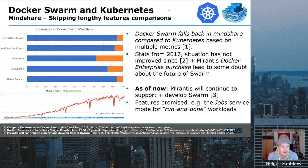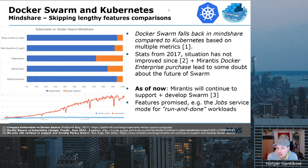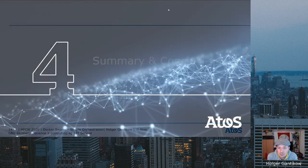Briefly touching the elephant in the room — Docker Swarm versus Kubernetes mindshare: Docker Swarm falls back in mindshare compared to Kubernetes based on multiple metrics such as news articles, web searches, and publications. These stats are from a 2017 blog post from Platform9, but they still seem valid according to recent Google Trends comparisons. The Mirantis acquisition of Docker Enterprise led to some doubt about Swarm's future, but Mirantis has promised to continue supporting and developing Swarm, even promising new features like the drop service mode for run-and-done workloads.